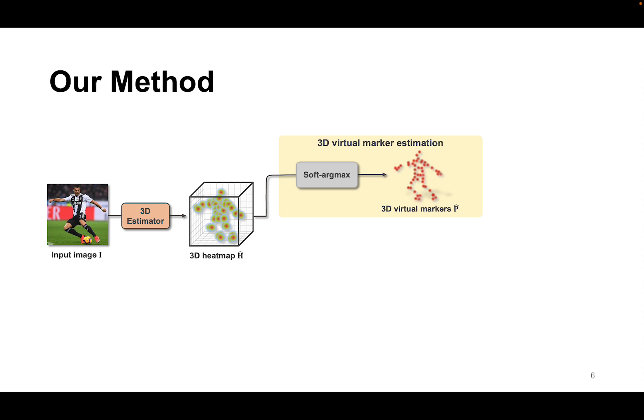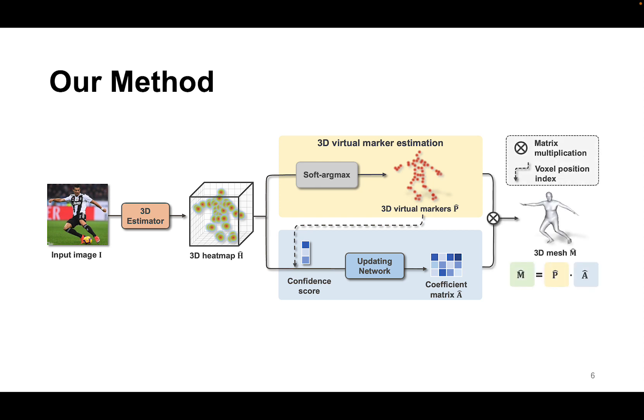The first branch uses a volumetric CNN to estimate the 3D positions of the markers, and the second branch reconstructs the full mesh by predicting a coefficient matrix. Then the mesh is reconstructed by simply multiplying the two matrices.